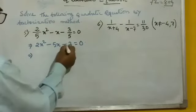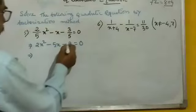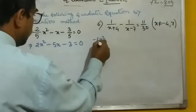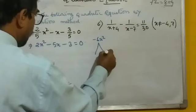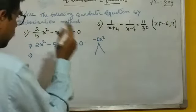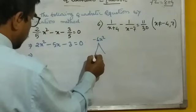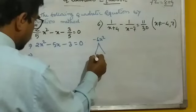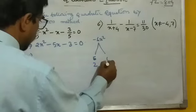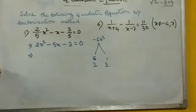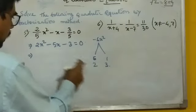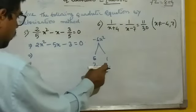Now we multiply to get minus 6x squared. We need two factors that give minus 6 and sum to minus 5. Two options: 6 and 1, or 2 and 3. Both pairs give a difference of 5 — 6 minus 1 gives 5, and 2 and 3 also give 5.